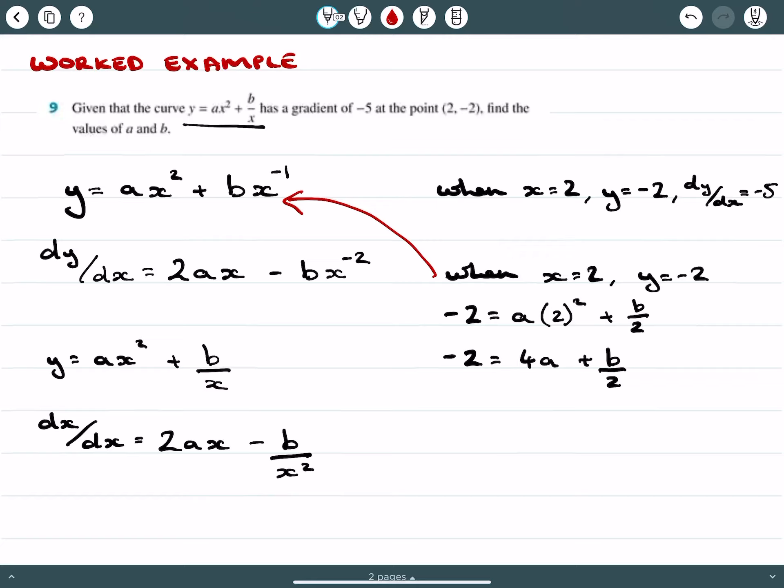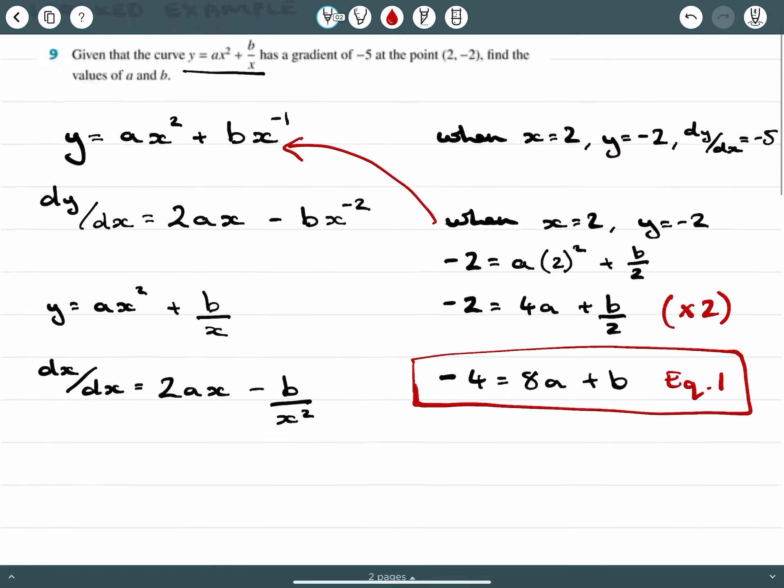I don't like this type of expression, so I'm going to multiply both sides by 2. That gives me negative 4 equals 8a plus b, which I'll call equation 1. Now I don't have any fractions to deal with, making it easier to resolve for a and b using simultaneous equations.